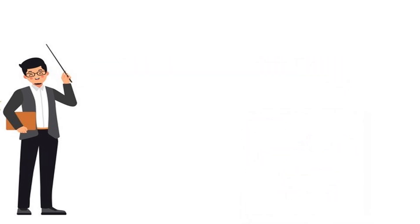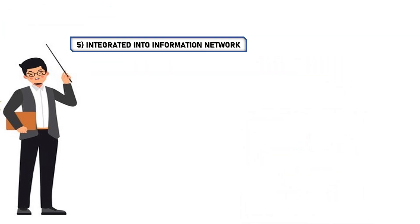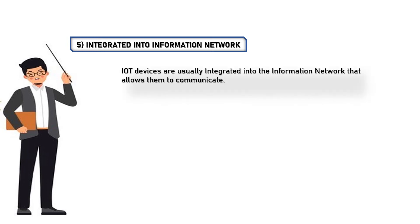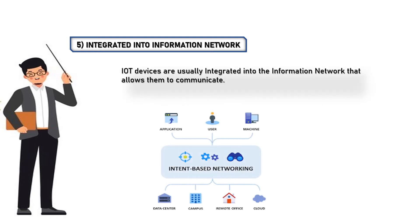5. Integrated into information network. IoT devices are usually integrated into the information network that allows them to communicate. These are the 5 main characteristics of IoT.